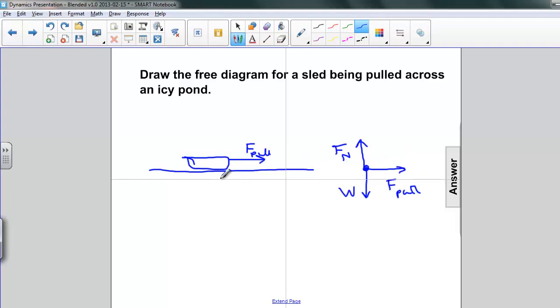Now, it's being pulled across an icy pond, so we're going to assume that there's no friction there, and there's nothing pulling back the other way. So we're going to have an acceleration moving in the direction of the pulling force. That's our free body diagram.